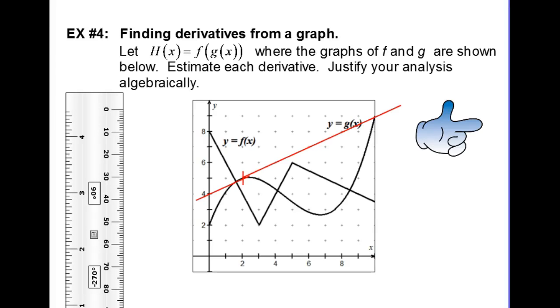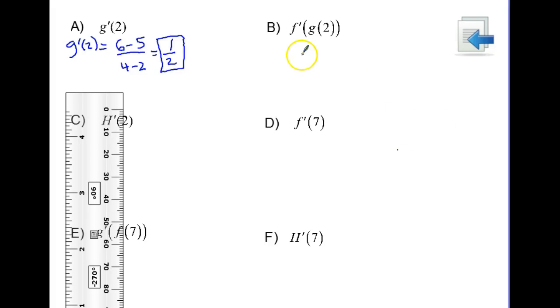Next in example 4 we have part B and we are going to be looking here for F prime of G of 2.